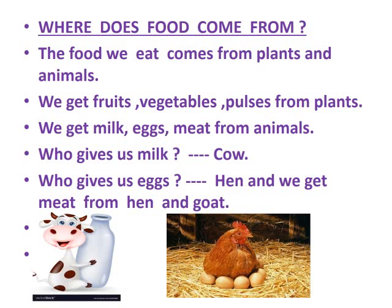We are eating different kinds of food. Some food we get from animals and some from plants. Where does food come from, children? The food we eat comes from plants and animals. We get fruits, vegetables, and pulses from plants.